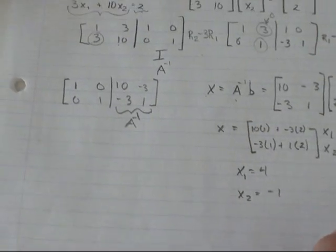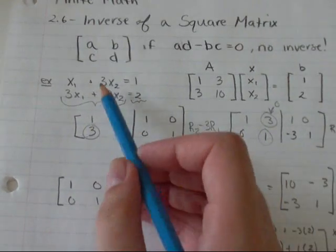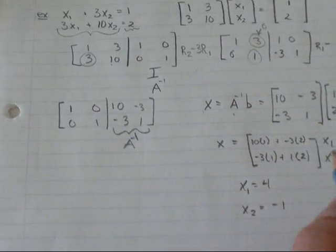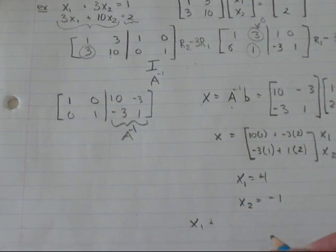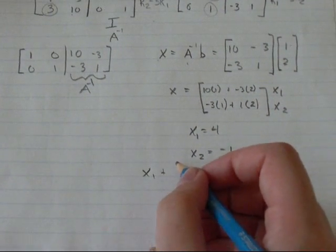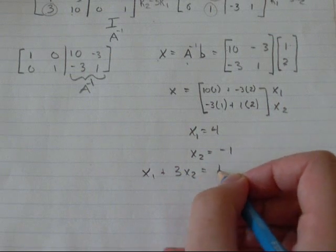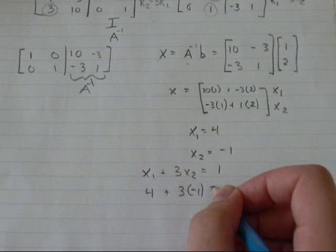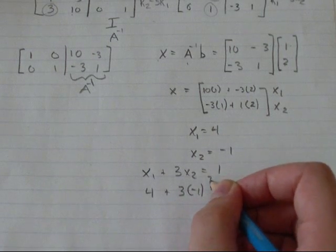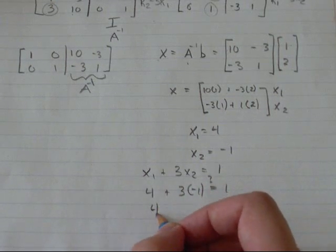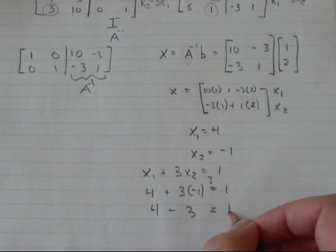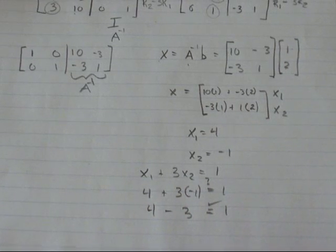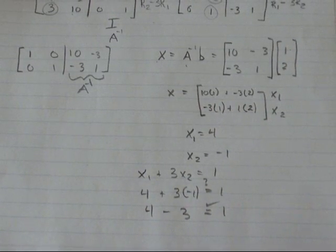And I'm going to check that by plugging it back into one of these equations. So I'll go x1 plus 3x2 equals 1. x1 is 4 plus 3 times negative 1. Does that equal 1 is the question. So 4 minus 3 definitely does equal 1. So I know I found the correct value for x.